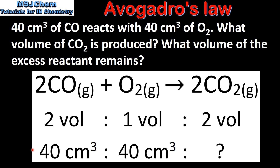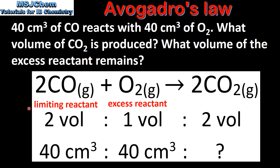So let's start by determining the limiting reactant. We're told in the question that we have 40 cm³ of carbon monoxide and oxygen. Because of the 1 to 2 ratio, 40 cm³ of oxygen requires 80 cm³ of carbon monoxide to react completely. Because we only have 40 cm³ of carbon monoxide, this makes it the limiting reactant. So carbon monoxide is the limiting reactant and oxygen is the excess reactant.